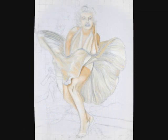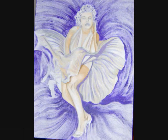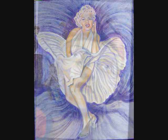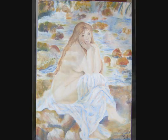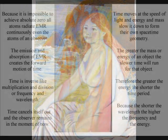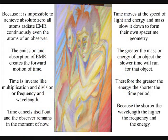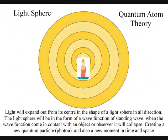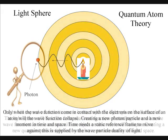This is what Socrates called a sea of beauty. To put this very simply, time moves at the speed of light, and energy and mass slow it down to form their own space-time geometry. Therefore, the observer will collapse the wave function, creating his or her own independent reality of time and space.